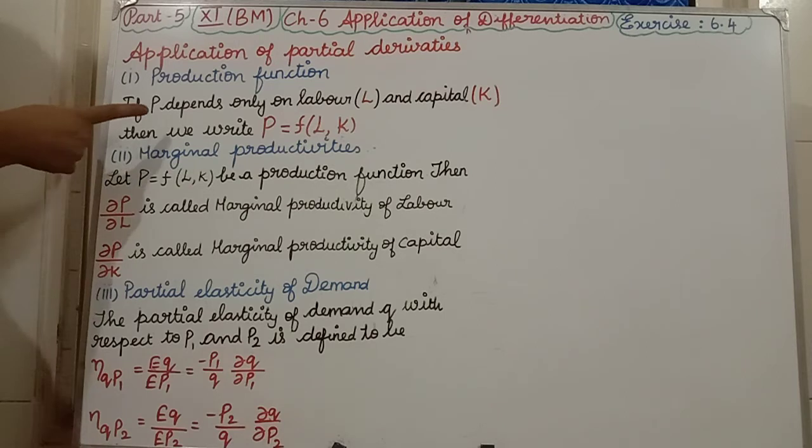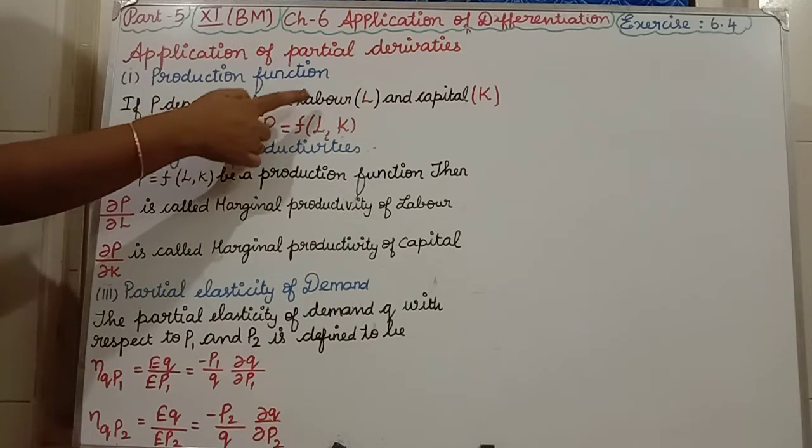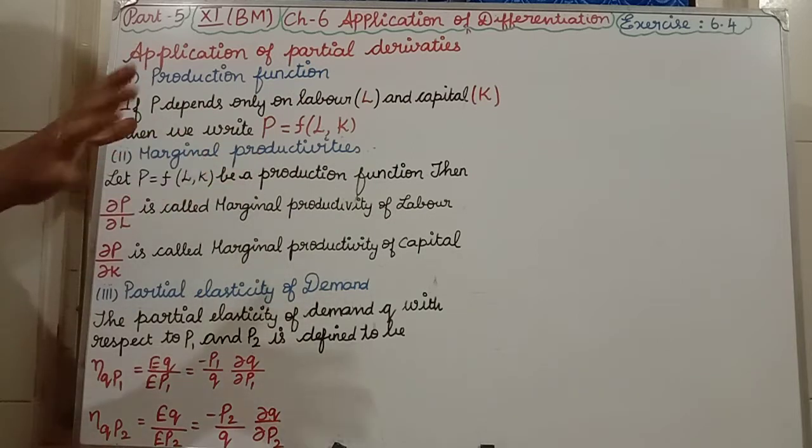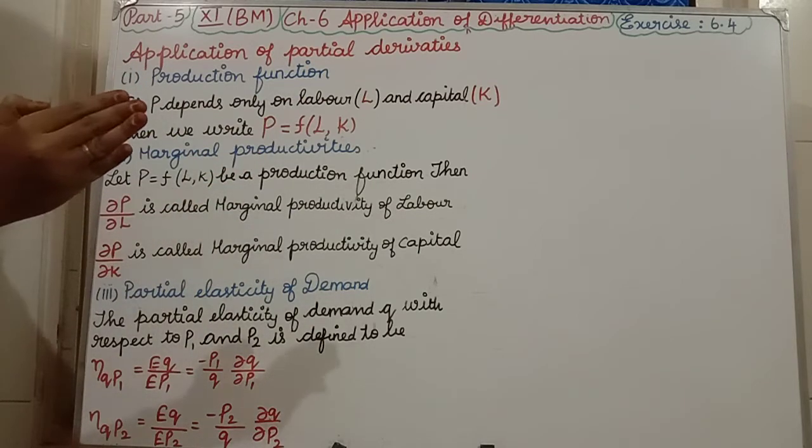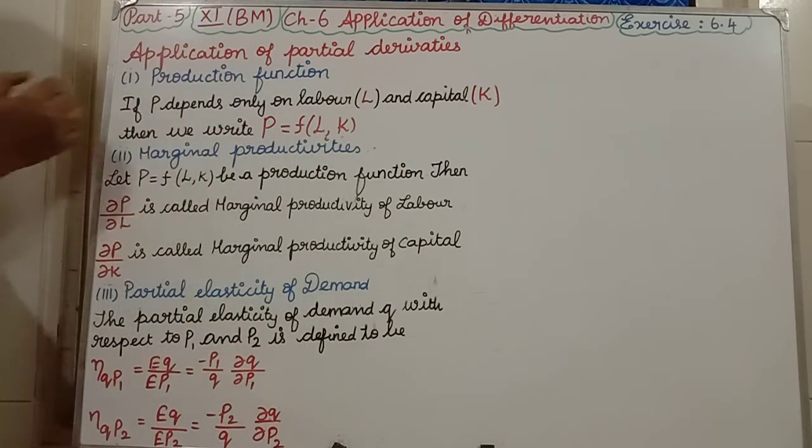But I have written here production function depends on only labour and capital. Not always it depends on only labour and capital. If you want to find the production for labour and capital, how do we write the function?